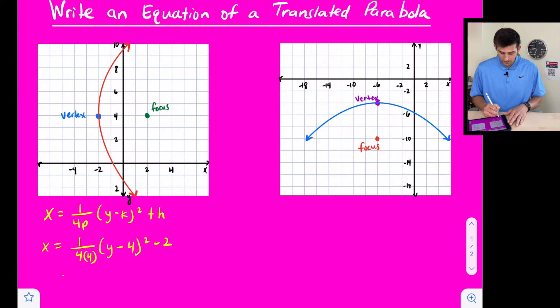Now we can simplify here. X is equal to 1 over 4 times 4 would be 16, and then Y minus 4 quantity squared minus 2. We can leave our equation just like that.